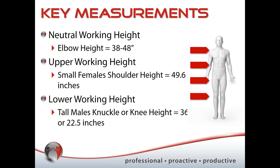The anthropometric number you get is the average of that population — it doesn't include standard deviations and statistical jargon, so you may have some people smaller than the actual number. But for the most part, trying to accommodate 95% of your working population: your small female shoulder height at 49.6 inches should provide working conditions where no one has to work above shoulder level — which means no shoulder injuries.